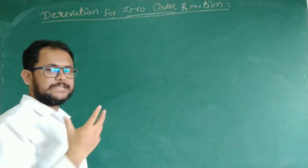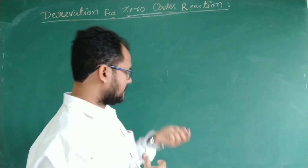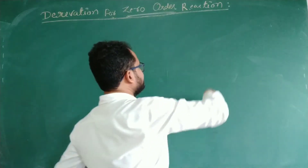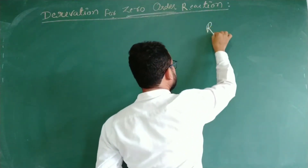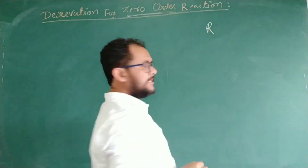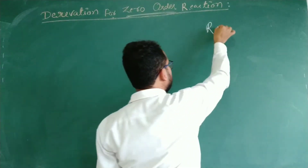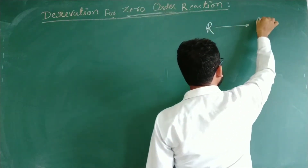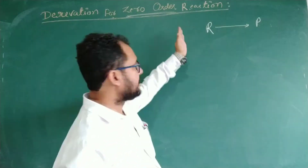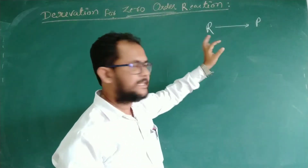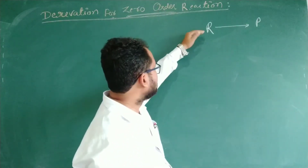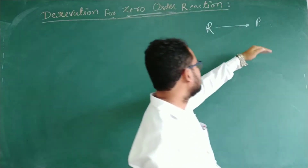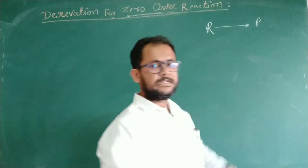So, what is the reactant in a zero-order reaction? The reactant becomes the product. With respect to time, the reactant concentration decreases and the product concentration increases.